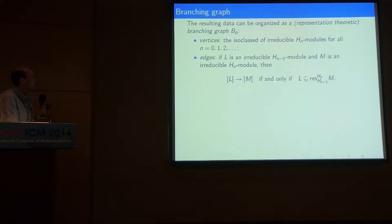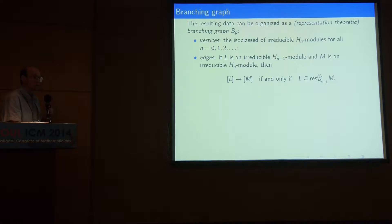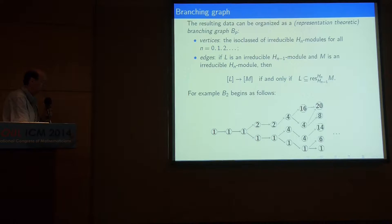This is a graph denoted B_P, which depends on the characteristic of the ground field P. Its vertices are the isomorphism classes of irreducible H_N modules — these are all irreducible representations of all symmetric groups. It is a directed graph: if L is an irreducible H_{N-1} module and M is an irreducible H_N module, then we draw an arrow from L to M if and only if L is a submodule of the restriction from H_N to H_{N-1}. For example, B_2 goes on forever to the right but begins as shown, where the numbers in the circles are just the dimensions of the corresponding irreducible representations.